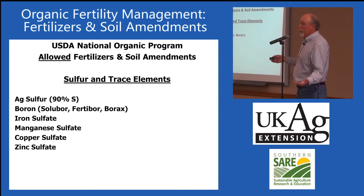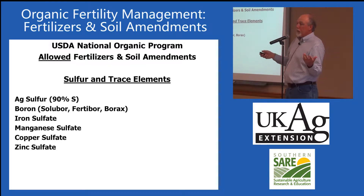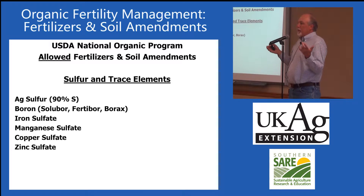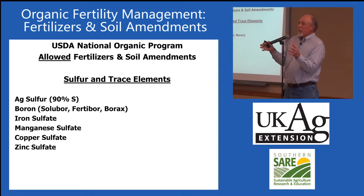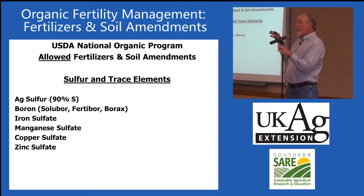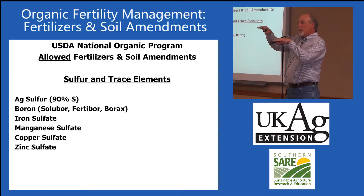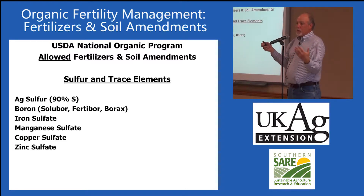I've worked with a 150-acre organic vegetable farm in Texas. They've been using compost at 10 tons per acre and using meat and bone meal. We're watching the phosphorus come back up on the soil test — that's really what we want.